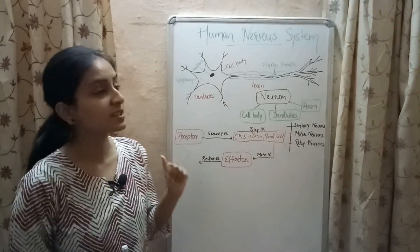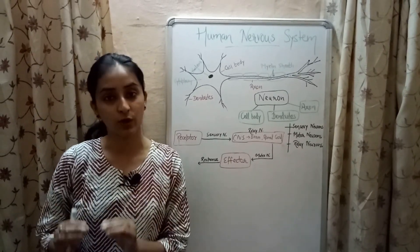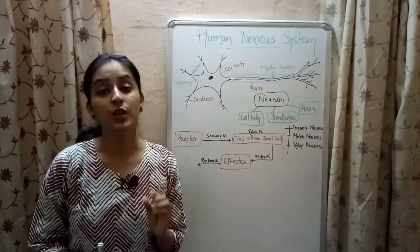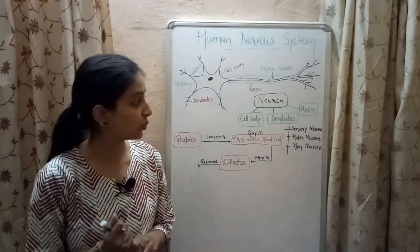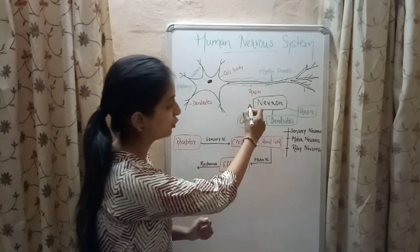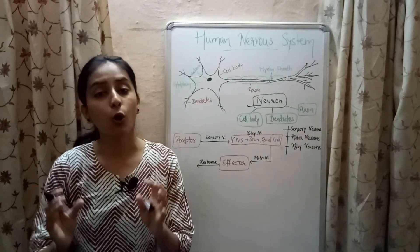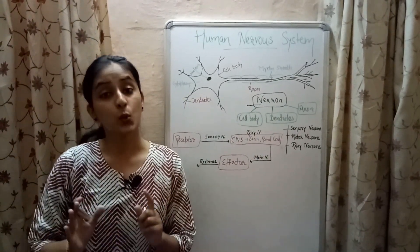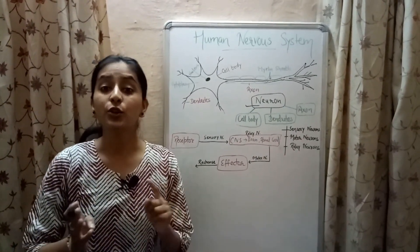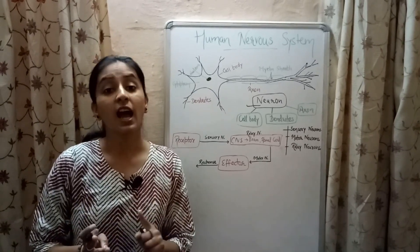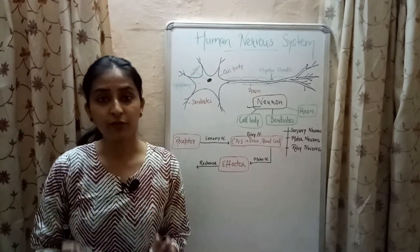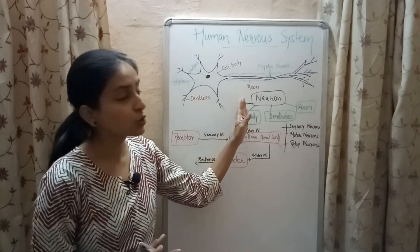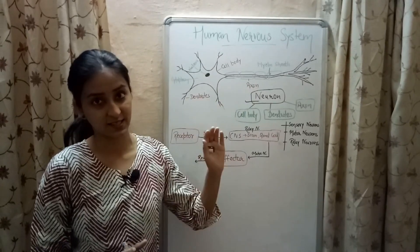Nervous system is that organ system of our body which is made up of nerve cells known as neurons, that coordinates all the activities of the body — which means your thinking, actions, behavior, everything is under the control of this system called the nervous system.